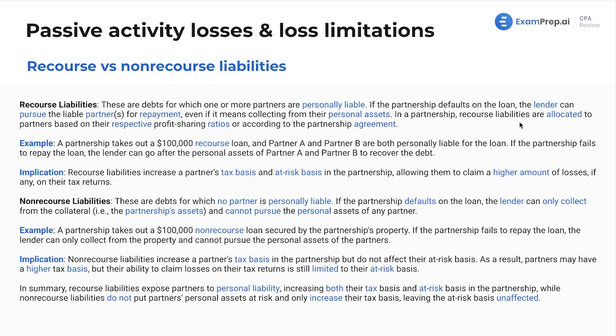In a partnership, recourse liabilities are allocated to partners based on the respective profit sharing ratios or according to the partnership agreement. Here is an example: a partnership takes out a $100,000 recourse loan, and partner A and partner B are both personally liable for the loan. Why would this happen? You might go to a bank and the bank says they'll give you a better interest rate if it's a recourse loan, because it's preferable for the bank — if the partnership defaults, the bank can come after these individuals. There's a lot of negotiating that happens with debt, a lot of different ways it can go, higher or lower interest rate, recourse or non-recourse.